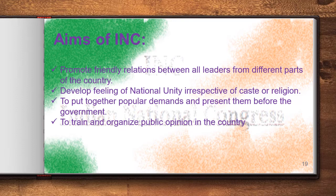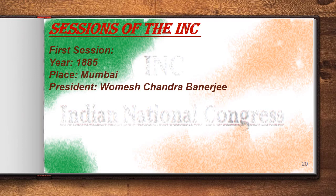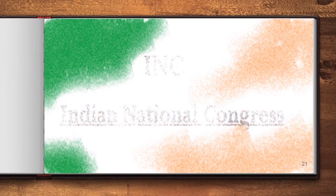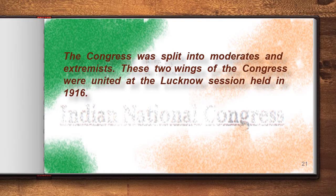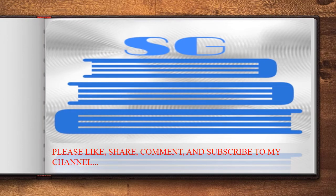The first session of the Indian National Congress was held in December 1885 under the presidentship of W.C. Banerjee. The second session of the Indian National Congress was held at Calcutta in 1886 under the presidentship of Dadabhai Naoroji. The Congress was later split into moderate and extremist wings, and these two wings were united at the Lucknow session held in 1916.